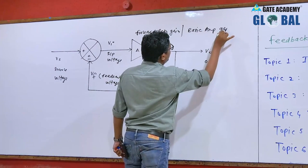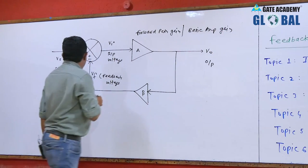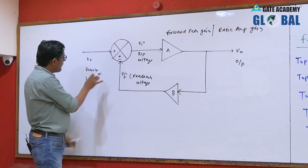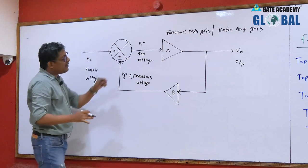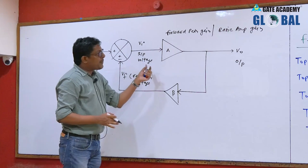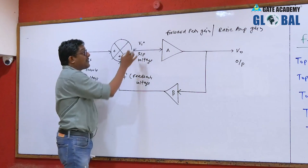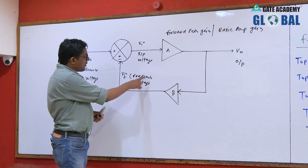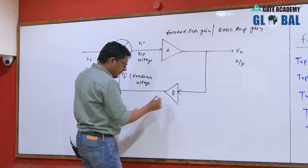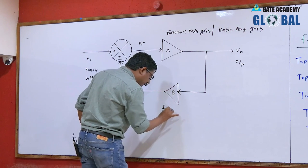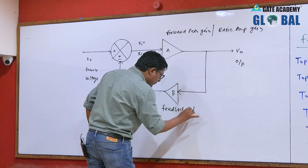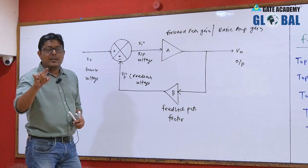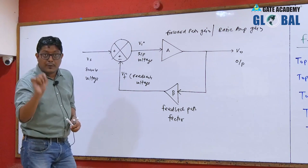The forward path gain is sometimes referred to as the basic amplifier gain. The source voltage Vs is the input voltage of this complete closed feedback structure, while VI is the input voltage specifically for the forward path or basic amplifier. VI is also referred to as the error signal, especially in the case of a unity feedback system. The feedback path factor beta is sometimes also referred to as the reverse transmission gain.